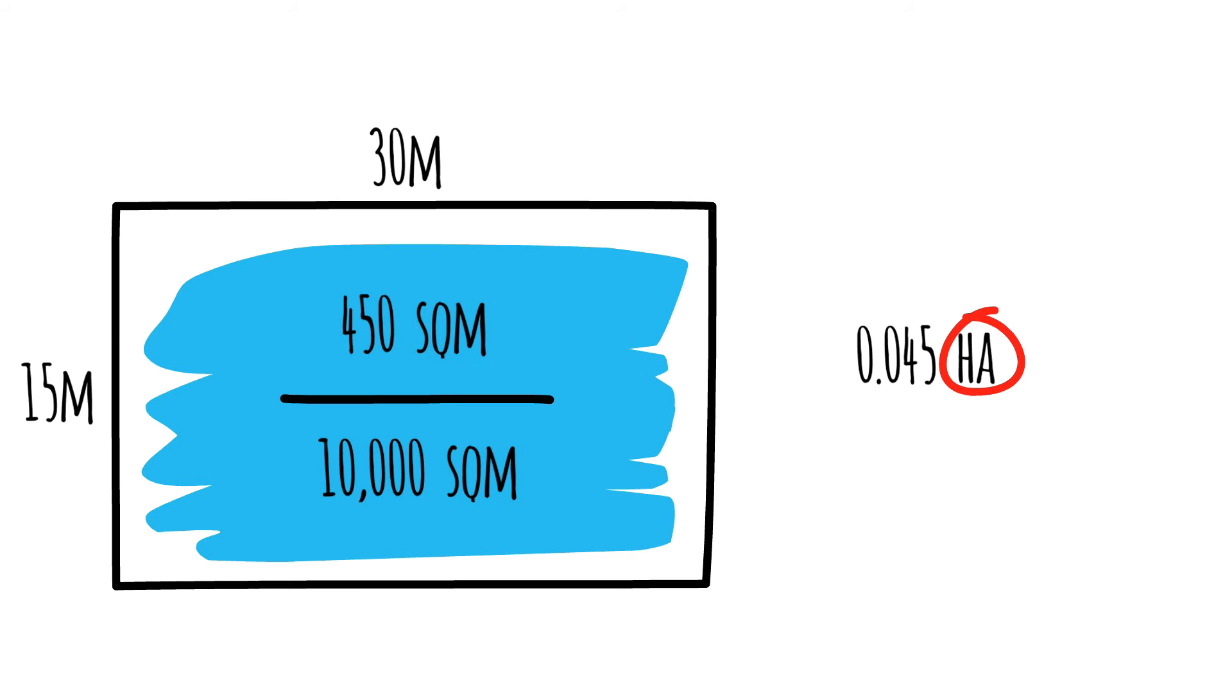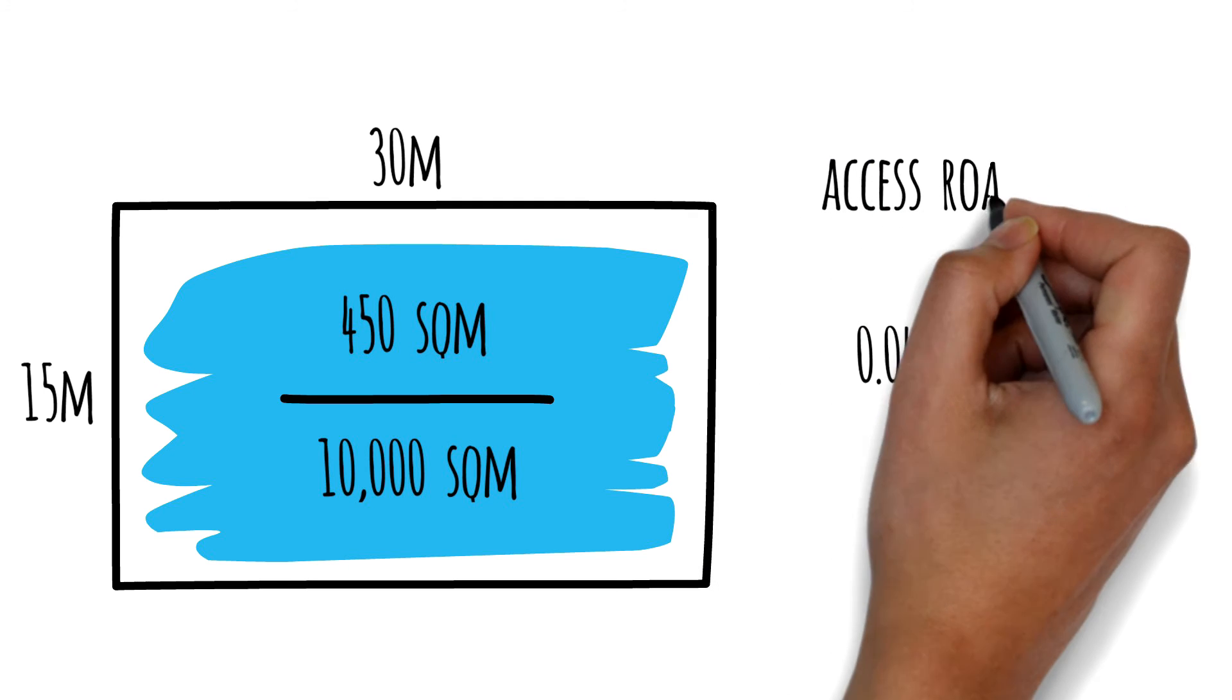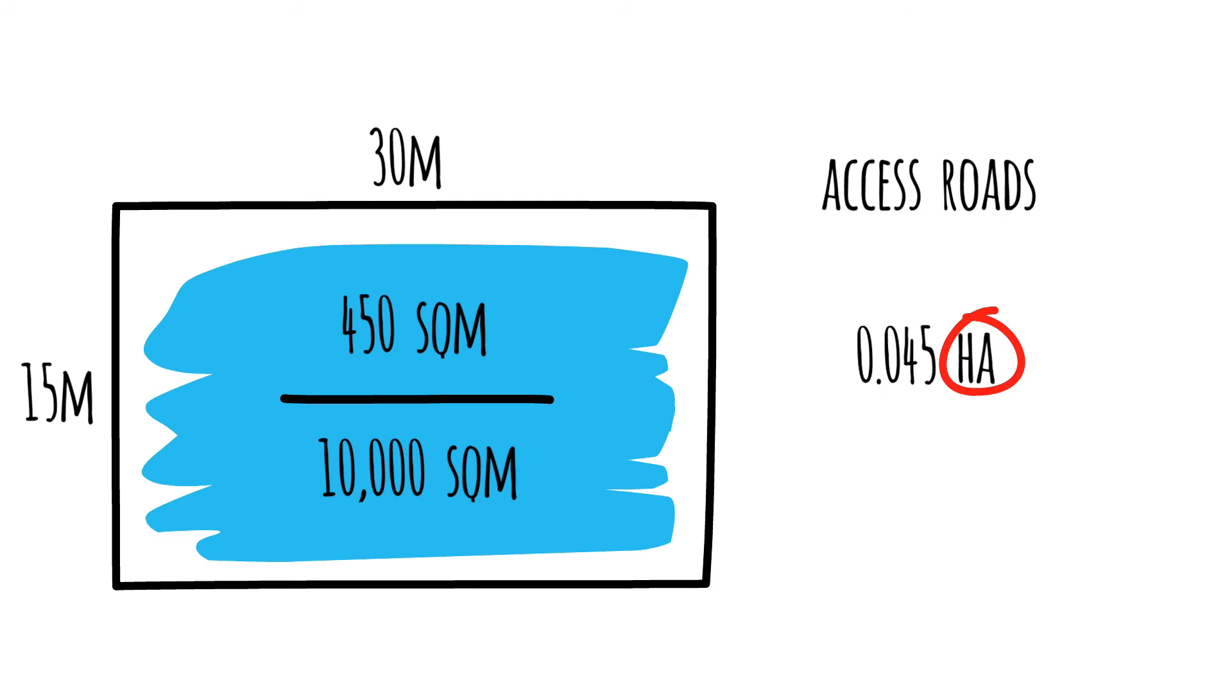Remember when I said an eighth of an acre is slightly larger than a 50 by 100 foot plot, even though they're one and the same thing? That's because when surveyors subdivide land, say an acre, they take into consideration other factors like access roads within that land. Hence the reason a 50 by 100 foot plot is slightly smaller than an eighth of an acre.